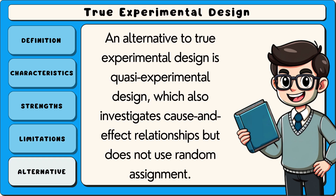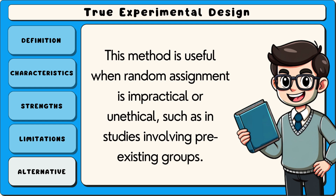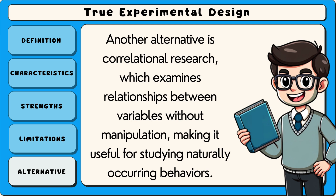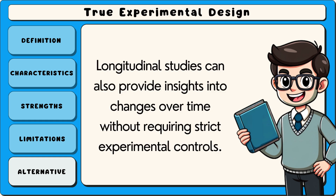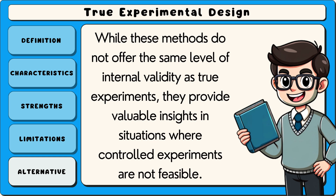An alternative to true experimental design is quasi-experimental design, which also investigates cause and effect relationships, but does not use random assignment. This method is useful when random assignment is impractical or unethical, such as in studies involving pre-existing groups. Another alternative is correlational research, which examines relationships between variables without manipulation, making it useful for studying naturally occurring behaviours. Longitudinal studies can also provide insights into changes over time without requiring strict experimental controls. While these methods do not offer the same level of internal validity as true experiments, they provide valuable insights in situations where controlled experiments are not feasible.